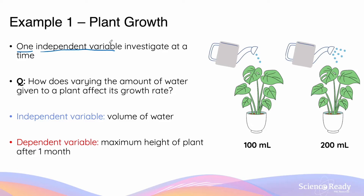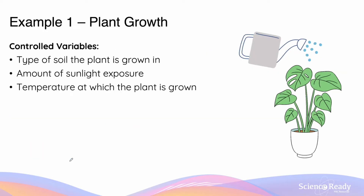The question I want to answer is: how does varying amounts of water given to a plant affect its growth rate? Therefore, the independent variable is the volume of water, and the dependent variable — which reflects the growth rate — will be the maximum height of the plant after one month.